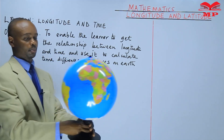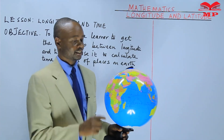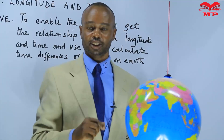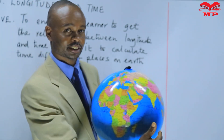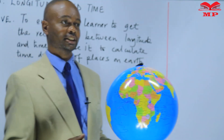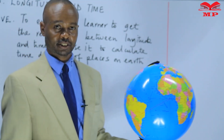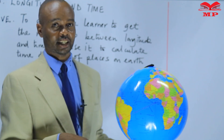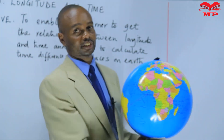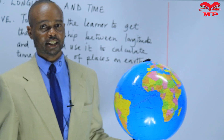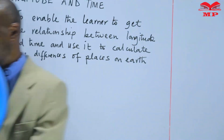Looking at our classroom globe, the earth rotates from west to east and takes 24 hours to complete one rotation of 360 degrees. That is why we see the sun rising from the east. More easterly places see the sun first, while westerly places see the sun later. Similarly, the sun sets earlier in easterly places than in westerly places.